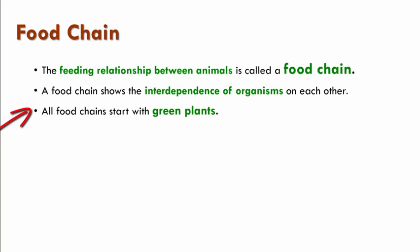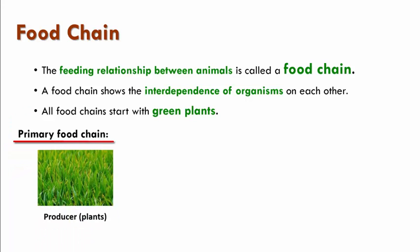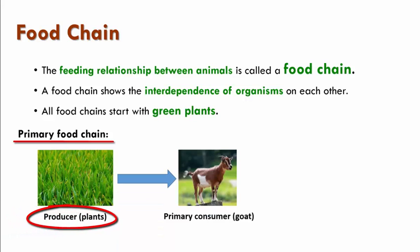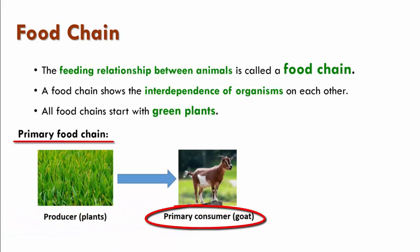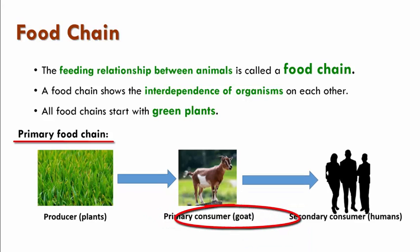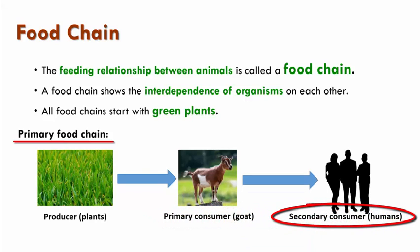All food chains start with green plants. In a primary food chain, first we have green plants which are known as producers. Next, we have primary consumers, for example, a goat. Then we have secondary consumers, which are human beings. This shows the interdependence between plants, animals and human beings.